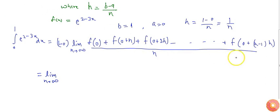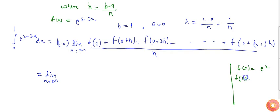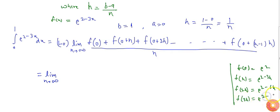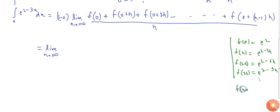Now computing the function values: f(0) = e^(2 - 3×0) = e², f(h) = e^(2-3h), f(2h) = e^(2-6h), f(3h) = e^(2-9h), and so on up to f((n-1)h) = e^(2 - 3(n-1)h).